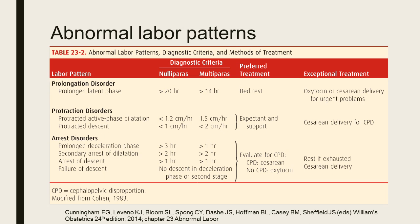The preferred treatment for prolongation disorder is bedrest. For protraction disorders, we have two types: protracted active phase dilatation and protracted descent. For protracted active phase dilatation, the diagnostic criterion is less than 1.2 cm per hour for nulliparas and less than 1.5 cm per hour for multiparas. For protracted descent, less than 1 cm per hour for nulliparas and less than 2 cm per hour for multiparas. Preferred treatment is expectant management and support, though cesarean delivery may be done in cases of cephalopelvic disproportion.